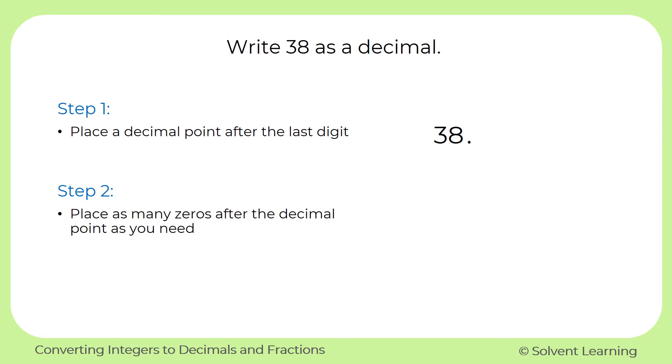And next, we can place as many zeros after the decimal point as you need. Depending on the situation and the type of problem you're working with, it might be helpful to have just one zero after the decimal point, or two zeros, or you can keep going and add as many zeros as you need. It doesn't change the value of our number. It still has a value of 38.